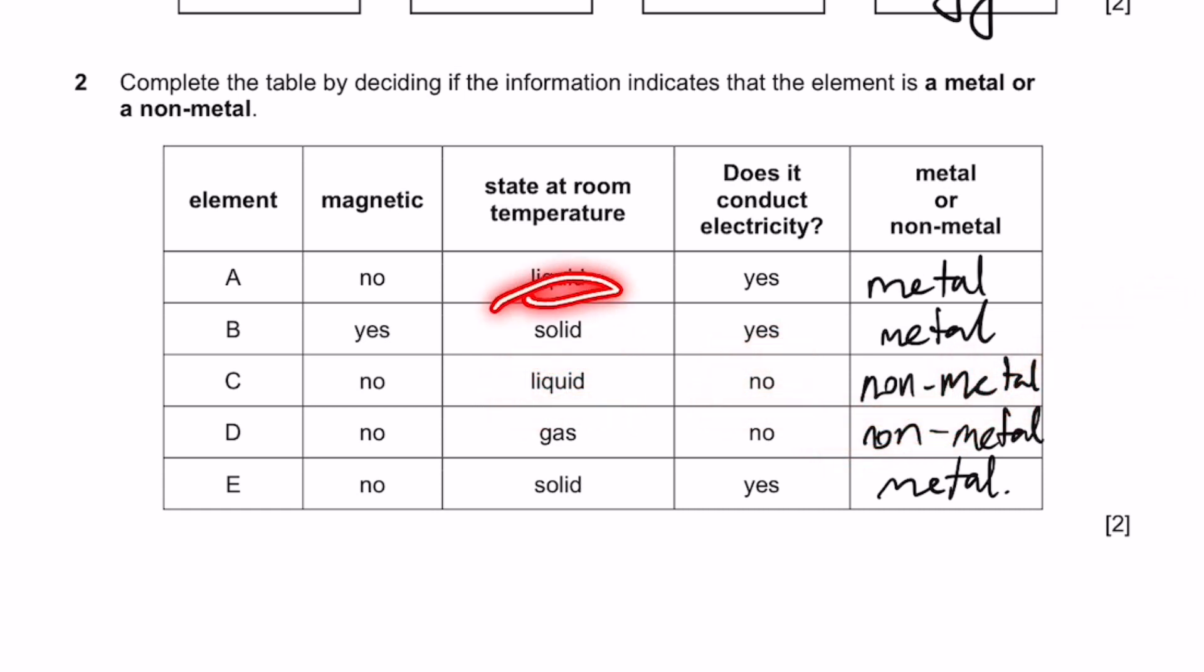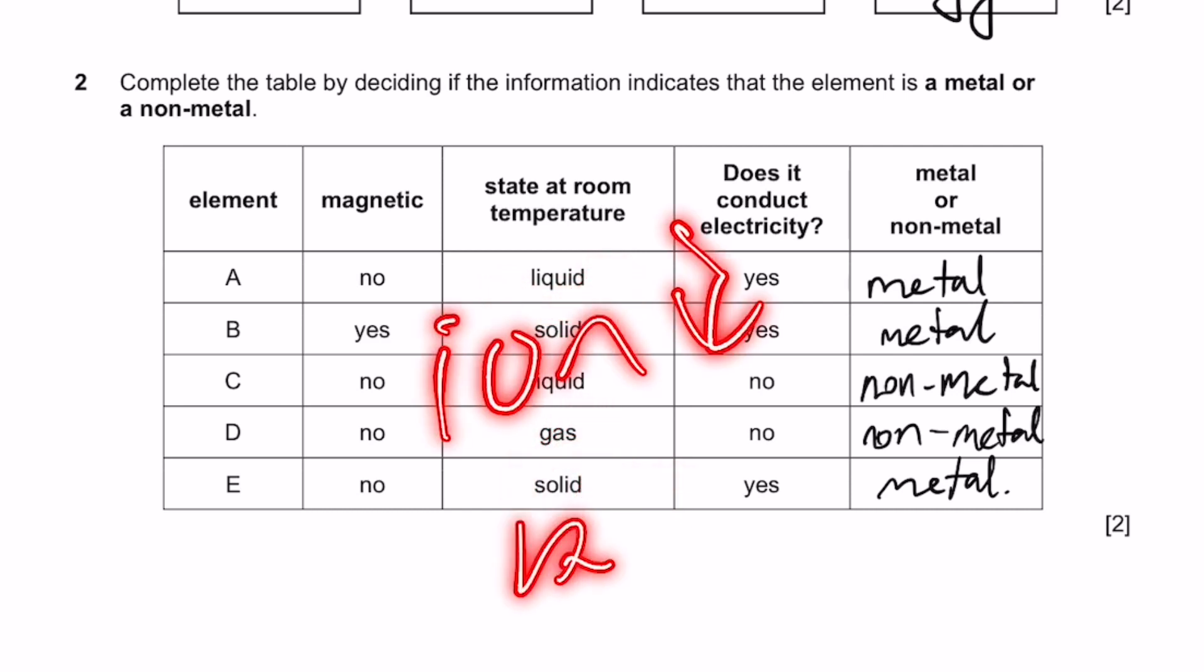For substance A, it is a liquid at room temperature but does conduct electricity. That means liquids that conduct electricity are also metals. So A, B, and E are metals and C and D are non-metals.